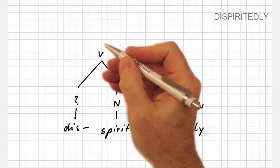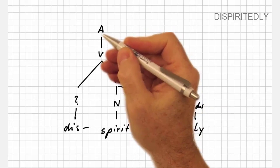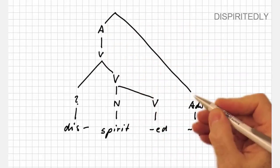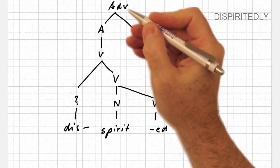Thus, we have to convert dispirited into an adjective first and can then generate the new word form dispiritedly, which is of course an adverb.